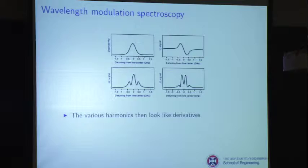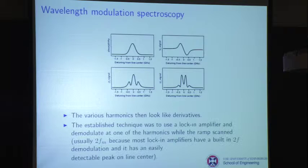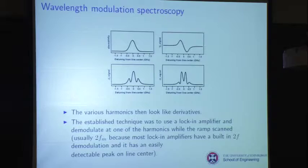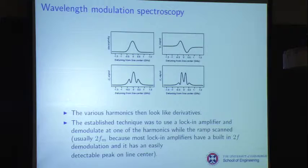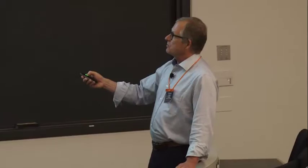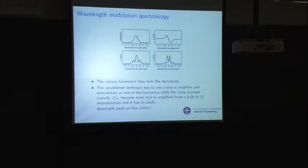Here are the derivative signals: the absorptivity at frequency zero is just the scan, the 1f signal is the first derivative, the 2f signal is the second derivative, the 3f, and so on. The old-fashioned technique was to use a lock-in amplifier demodulating at the 2f harmonic while the ramp scanned — people used 2f because there was literally a 2f button on lock-in amplifiers. What came out as you slow-scanned was the second derivative of the Voigt profile, which required pages of Fourier series modeling to extract concentrations.